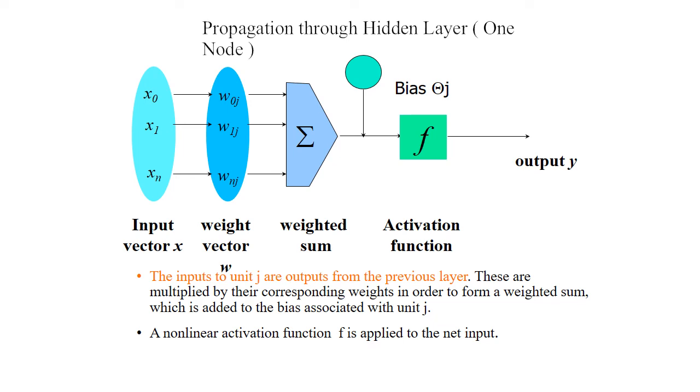The inputs to unit j are outputs from the previous layer. These are multiplied by their corresponding weights in order to form a weighted sum, which is added to the bias associated with unit j. This is the simple structure of your one node. A nonlinear activation function f is applied to the net input. At the last, we will have the function f, nonlinear activation function f, in order to receive the output.